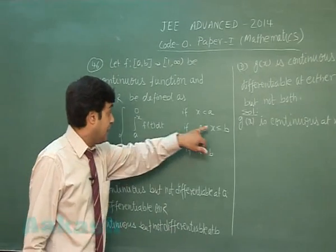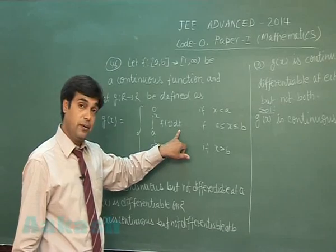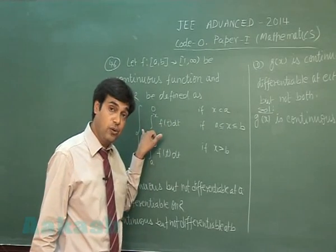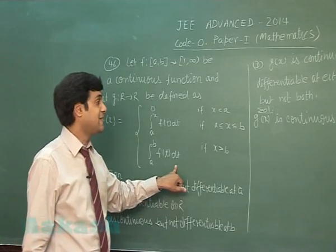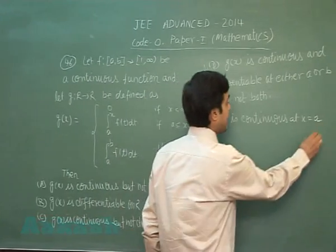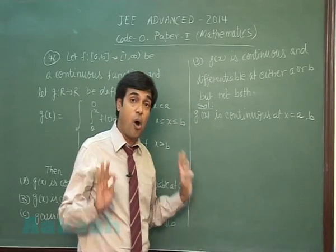Check for b. Left hand limit at b, integral a to b f(t)dt. Same is the value. RHL, a to b f(t)dt again same, means it is continuous at x equals b as well. So the function is continuous for all real numbers.